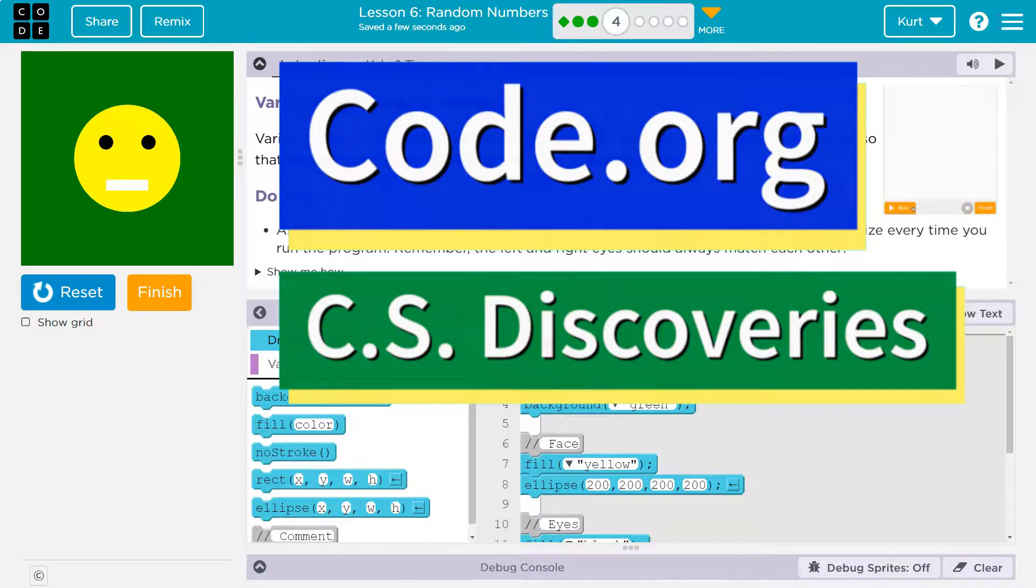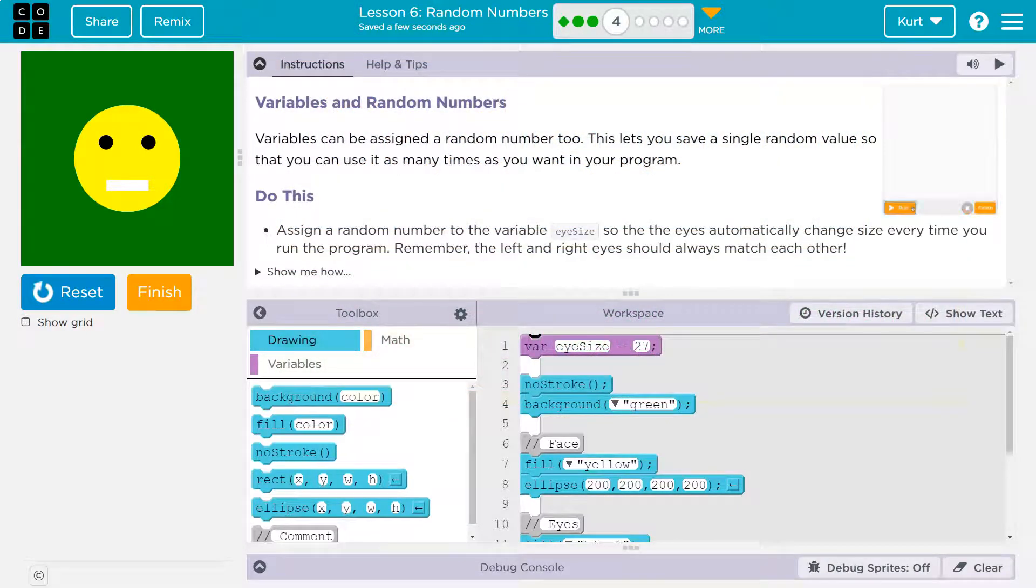This is code.org. Let's see what we're doing. Variables and random numbers. Variables can be assigned a random number too. This lets you save a single random value so that you can use it many times as you want in your program.